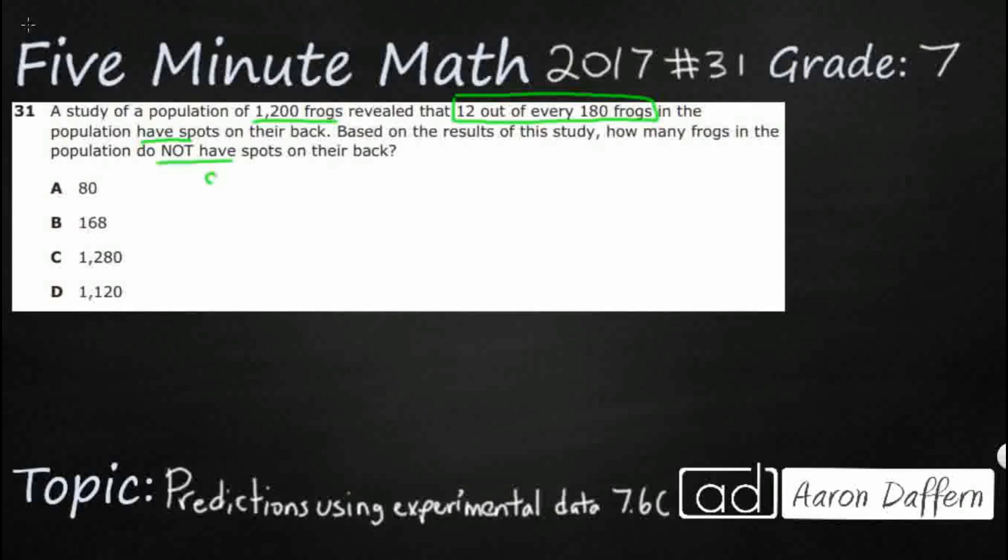This is when we are looking for what we call the complement, the other half of our experimental data. We know 12 out of every 180 have spots. So how much do not have spots?